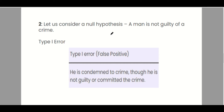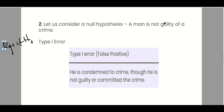Example 2: The null hypothesis is that a man is not guilty of a crime. In the type 1 error, we reject the true null hypothesis. Assuming this is true, we reject the claim that the man is not guilty, so our conclusion is that the man is guilty of the crime — he is condemned though he did not commit the crime. That is why it's an error.